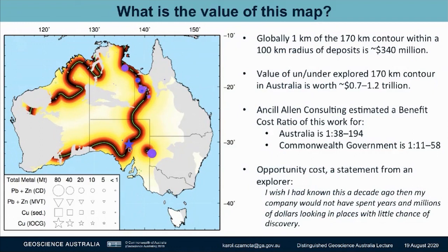Ansel Allen Consulting did an assessment of this study and estimated that for every dollar that the Commonwealth Government has spent, it's likely that $38 to $194 will go back to Australia, or $11 to $58 directly back to the Commonwealth. Already, explorers have used this work to peg ground. But there is a statement from one explorer I spoke to which I think shows the true value of it. She said, 'I wish I had known this a decade ago when my company was exploring in the southwestern region of the Northern Territory' — because it turns out this region has very little chance for discovery. In other words, it was a lost opportunity cost for them. And if we find these deposits, that's where the jobs of tomorrow will come from.